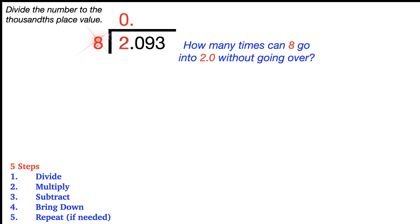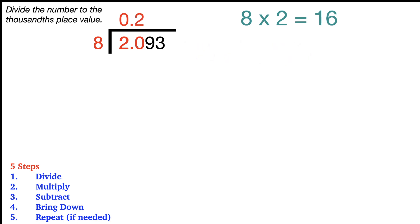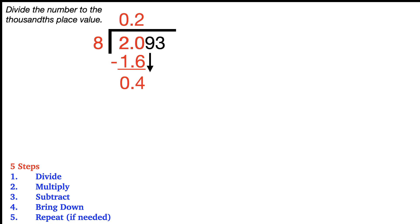Ask yourself how many times can eight go into two and zero tenths without going over. That would be two because eight times two — and that goes on top — is sixteen. The sixteen goes underneath, but with the decimal it becomes one and six tenths. We're now ready to subtract. That would be four tenths, and our next step is to bring down the next digit, which is the nine. That gives us forty-nine hundredths.